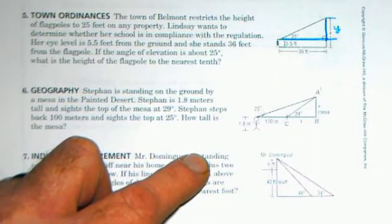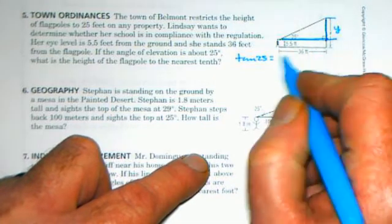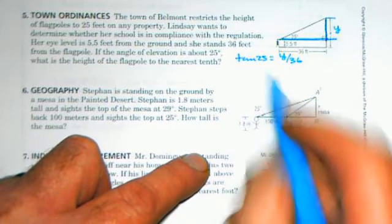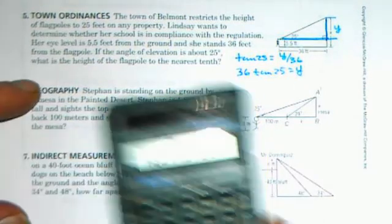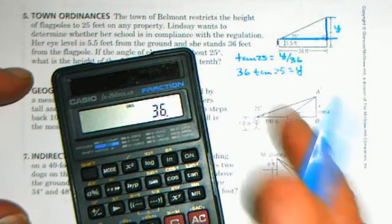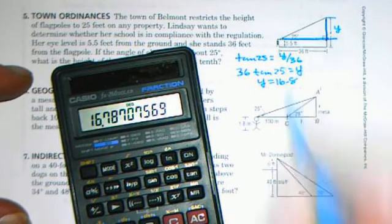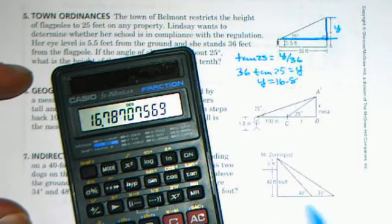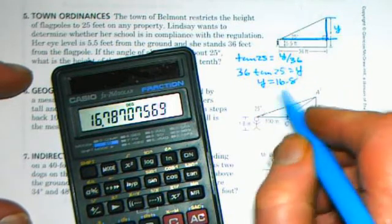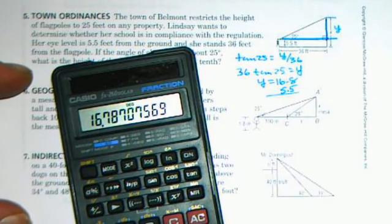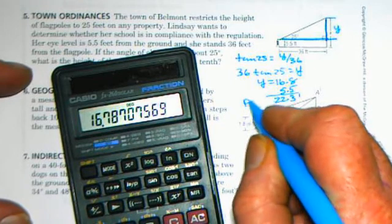We've got the 25 degree angle, so we're going to set up tangent of 25 is equal to y over 36, or 36 times tangent of 25 is equal to y. I'm going to use the calculator to solve that one. We get 36 times tangent 25 equals 16.8. So this y part here is 16.8, but the eye level is five and a half feet up off the ground, so we have to add 5.5 onto that to figure out how tall the flagpole is and we get 22.3. So the flagpole is 22.3 feet tall.